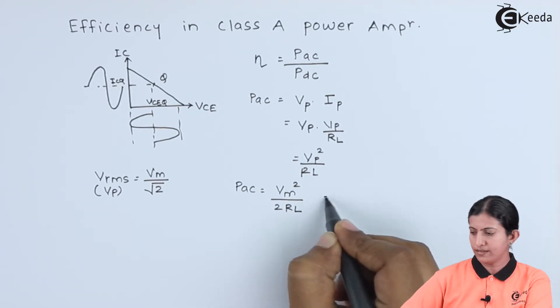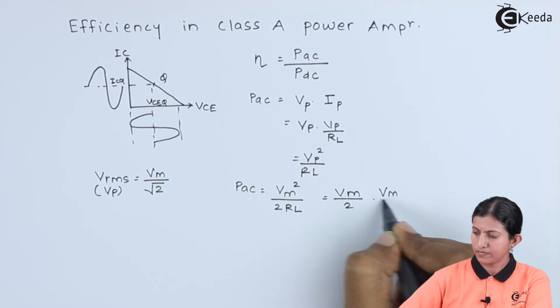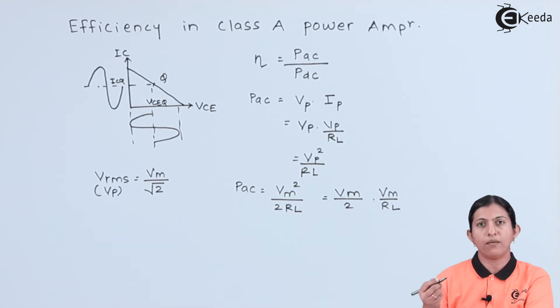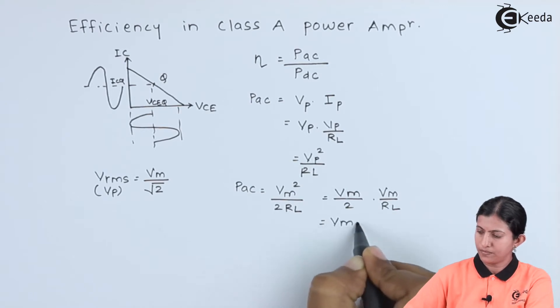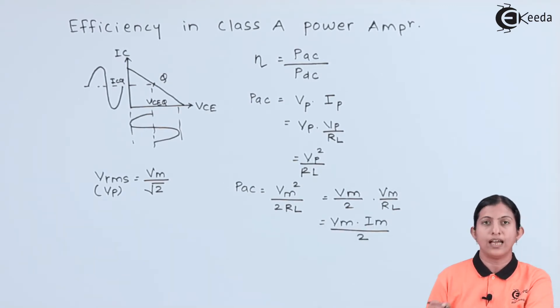We will write the equation as: instead of Vm by RL, we will write Im. As this is the peak voltage and peak current, in transformer coupled class A power amplifier, the peak voltage is VCEQ and the peak current is ICQ.